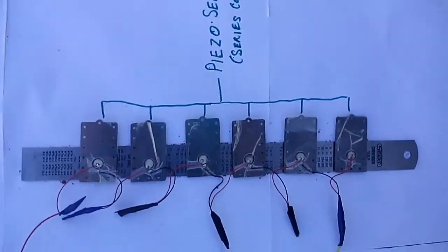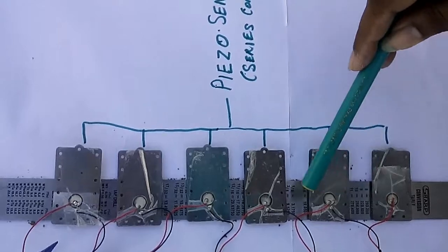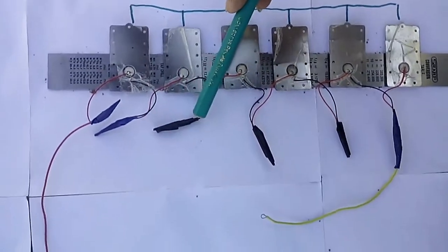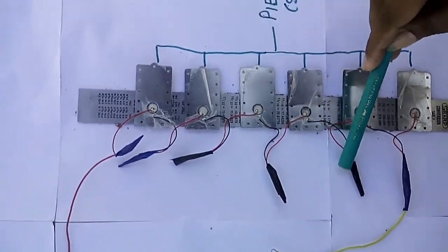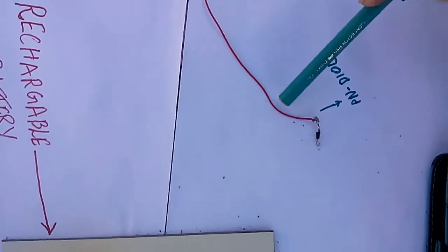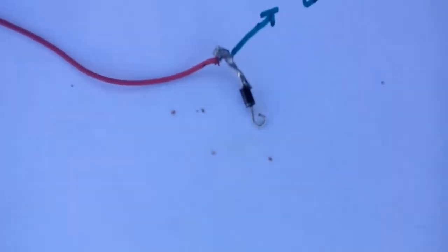This is a circuit in which the piezoelectric sensors are connected in series. As you can see, the positive and negative ends of each sensor are connected in series. The positive end of the sensor is connected to a PN diode. The PN diode avoids reverse flow of current.